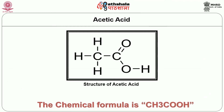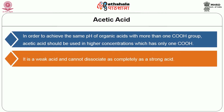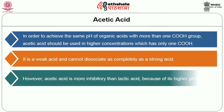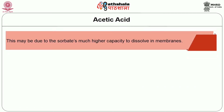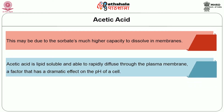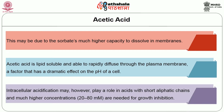The chemical formula of acetic acid is CH3COOH. In order to achieve the same pH as organic acids with more than one COOH group, acetic acid should be used in higher concentrations since it has only one COOH. It is a weak acid and cannot dissociate as completely as a strong acid. However, acetic acid is more inhibitory than lactic acid because of its higher pKa value. Acetate is far less inhibitory to yeast than the more lipophilic sorbate, although they have the same pKa value. This may be due to sorbate's much higher capacity to dissolve in membranes. Acetic acid is lipid soluble and able to rapidly diffuse through the plasma membrane, a factor that has a dramatic effect on the pH of a cell.